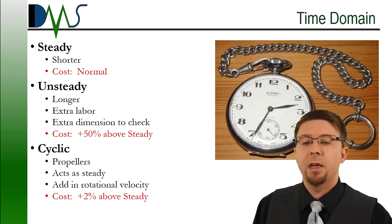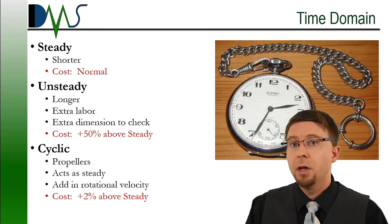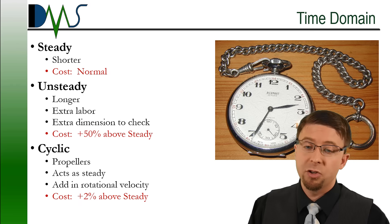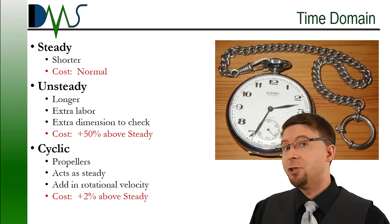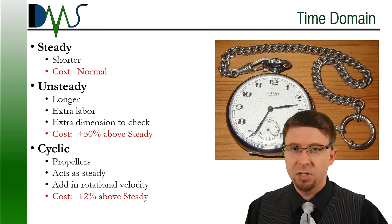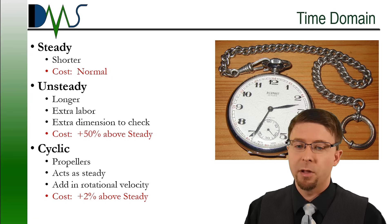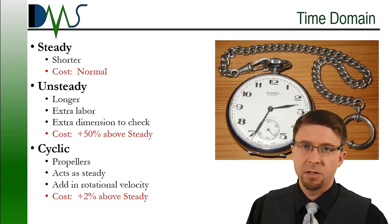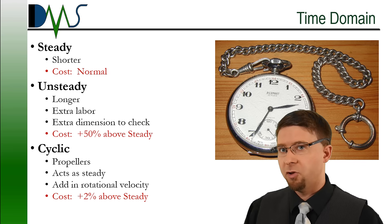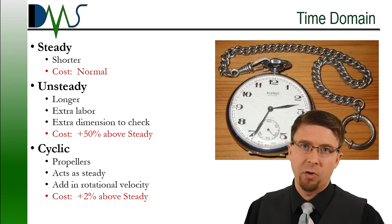Then we have unsteady cases, which are going to be much longer. Typically, you first have to run a steady case to get the initialization condition, then run the unsteady case to find out what's actually changing with time. It takes extra labor, and there's now an extra dimension to check — CFD operators have to check mesh resolution quality in all three spatial dimensions, and also in the fourth dimension: time. It's about 50% extra cost compared to a steady case, depending on how long a time domain you're trying to simulate.